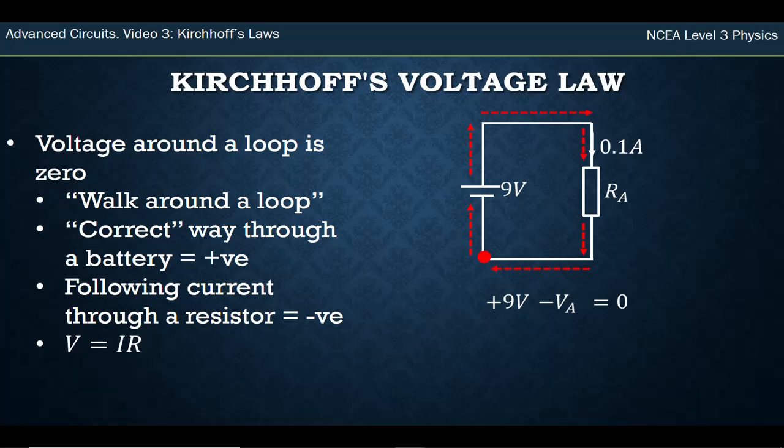So we've done a loop and the rule is the voltage around the loop is zero, so we can say that equals zero. We also know that V = IR, so we can actually replace this unknown voltage with its current times its resistance. We substitute that in. We rearrange that equation so we put -0.1 times R on the other side of the equal sign, and then we can divide both sides by 0.1 and we get the resistance of 90 ohms.